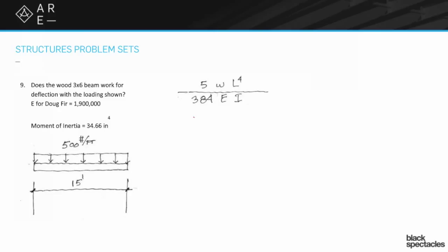The 5 and the 384 are constants—that's just part of the equation. But we're going to fill in the rest. w is 500 pounds per foot, L is 15 feet to the fourth, and then we're all over the 384.